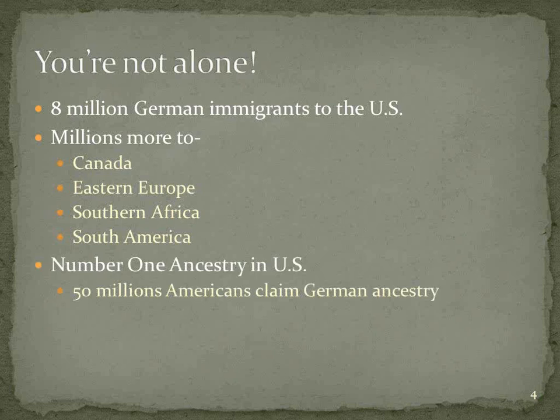German ancestry is the number one ancestry in the United States. Since 1990, when the Census Bureau was asking each individual what their ancestry was, Germany has been number one. About 50 million Americans claim German ancestry. They may have other ancestors as well — my wife, for instance, is where my family gets all its German ancestors, but she has a lot more than just Germans.